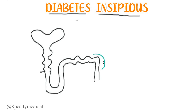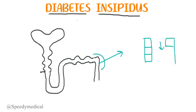I am magnifying the collecting tubule. In the collecting tubule we have the lumen from where the urine flows, and the wall of the collecting tubule contains some specific kind of cells. These are called principal cells. The collecting tubule is lined by these principal cells.